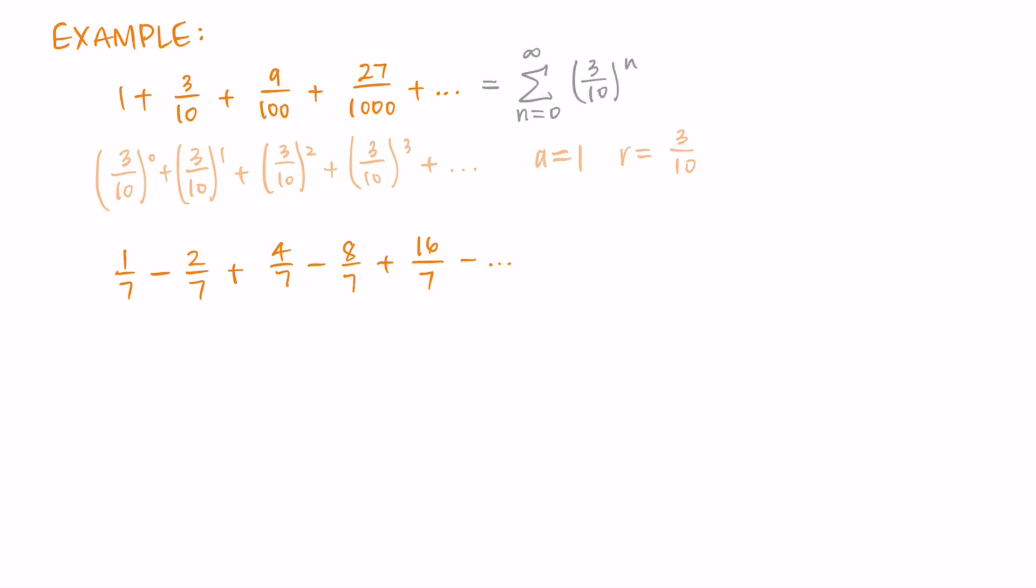Then, because 3/10 is in between negative 1 and 1, this series will converge, and so I can write this final solution to this sum as a/(1-r). So I'm having 1/(1-3/10), that's 1/(7/10), which is 10/7 when we multiply by the reciprocal.